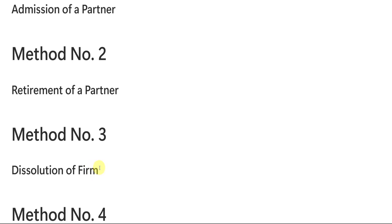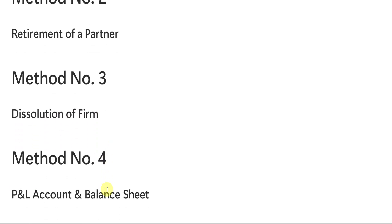Method number 3 is dissolution of firm — a definitely important topic. From unit number 2, you will be seeing dissolution of firm questions. And method number 4 is P&L account as well as balance sheet, which is basically company final accounts. So yes, P&L account and balance sheet is your method number 4.